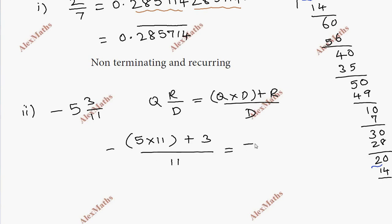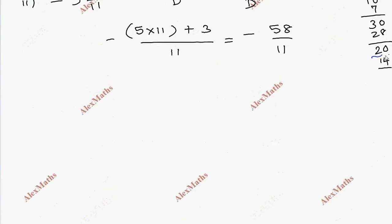Minus 58 by 11 — we perform the division. So 5 times 55, balance 3. Then 0 added, decimal taken. 2 times 22, balance 8. 7 times 77, balance 3.